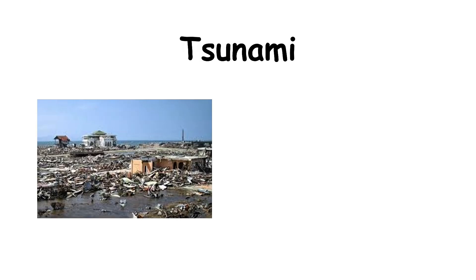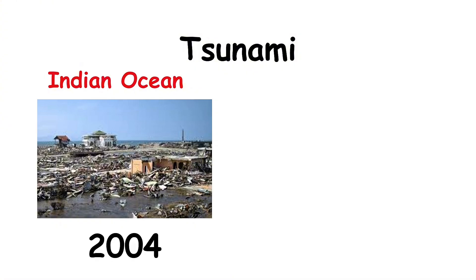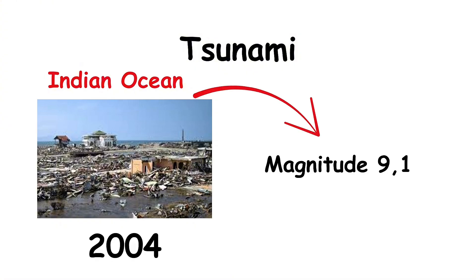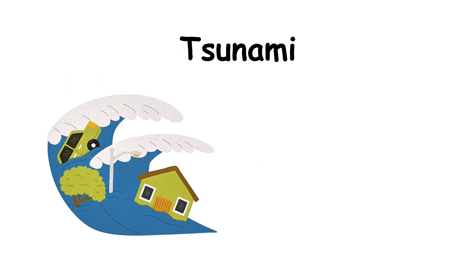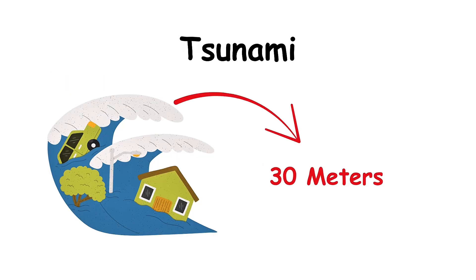One of the deadliest tsunamis in history struck the Indian Ocean in 2004, triggered by a magnitude 9.1 earthquake off the coast of Sumatra. The waves reached up to 30 meters high and impacted 14 countries.